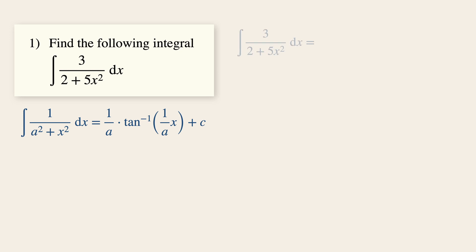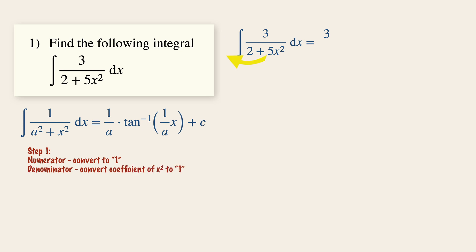The very first thing we can do is factorize the numerator so it gives us a value of 1. We take out the value 3 and put it outside. We also factorize 5 from the denominator so that the coefficient of x squared becomes 1. Doing so, we will have 3 over 5 times the integral of 1 over 2 over 5 plus x squared dx.